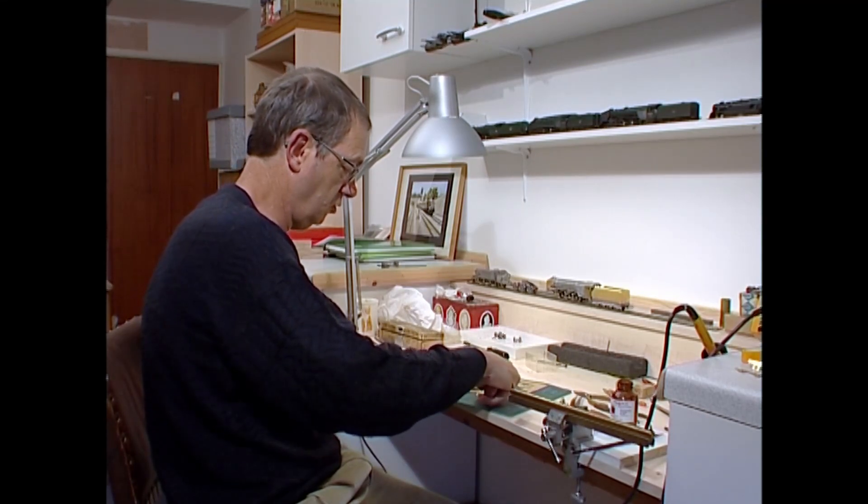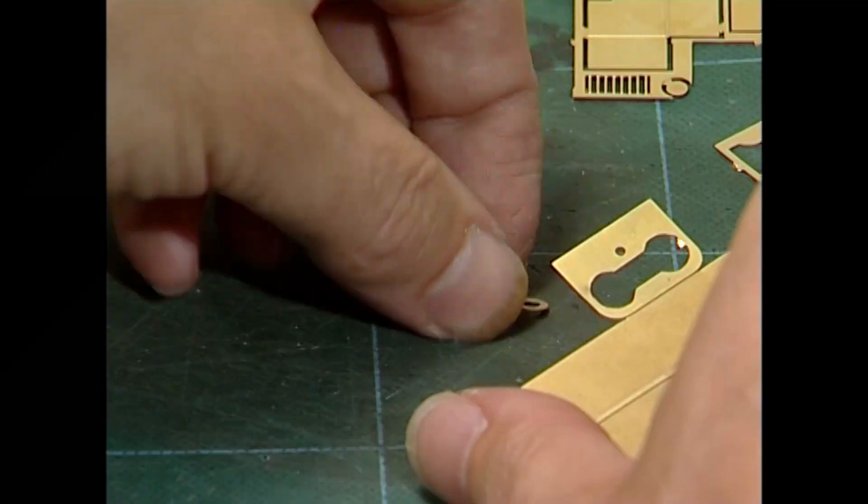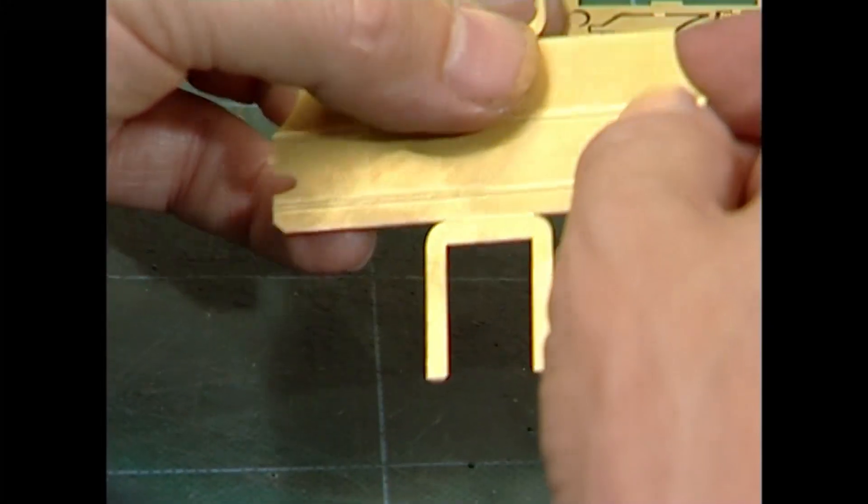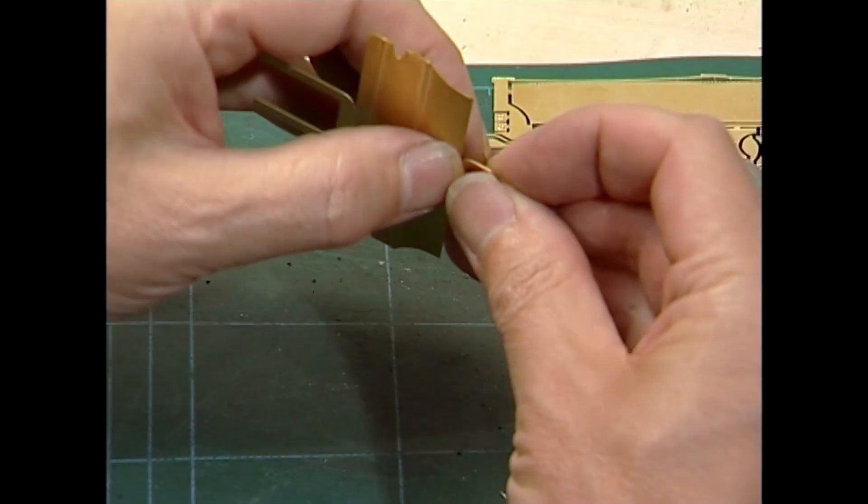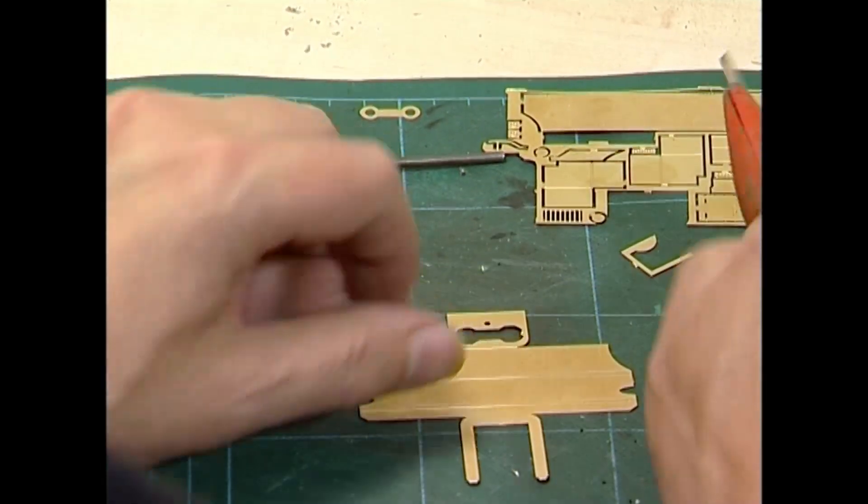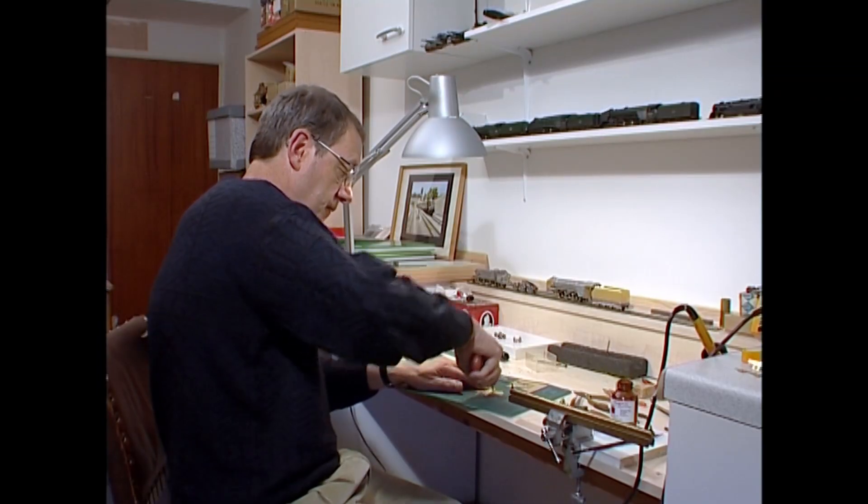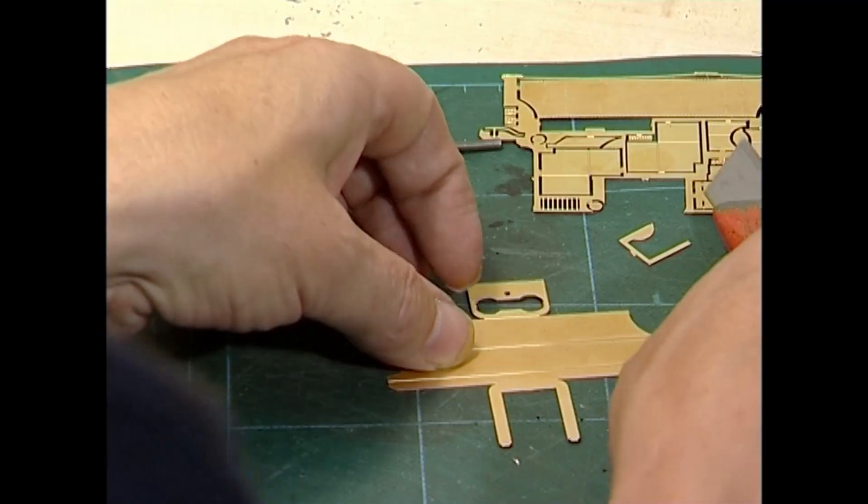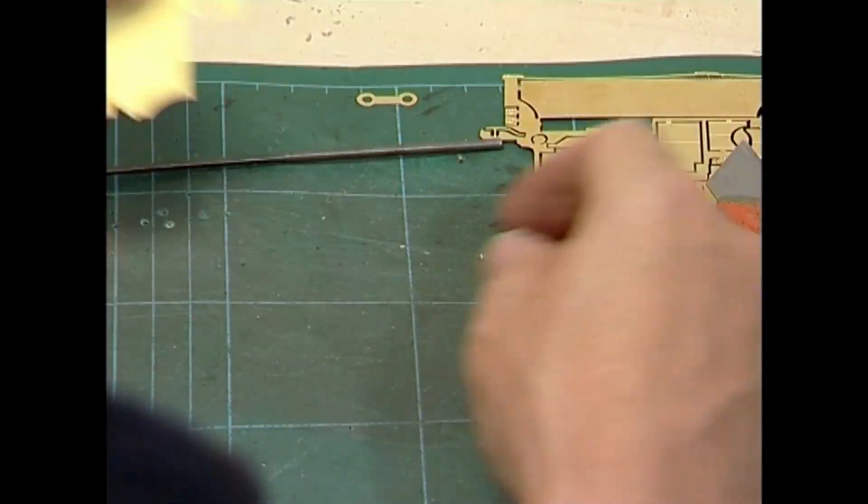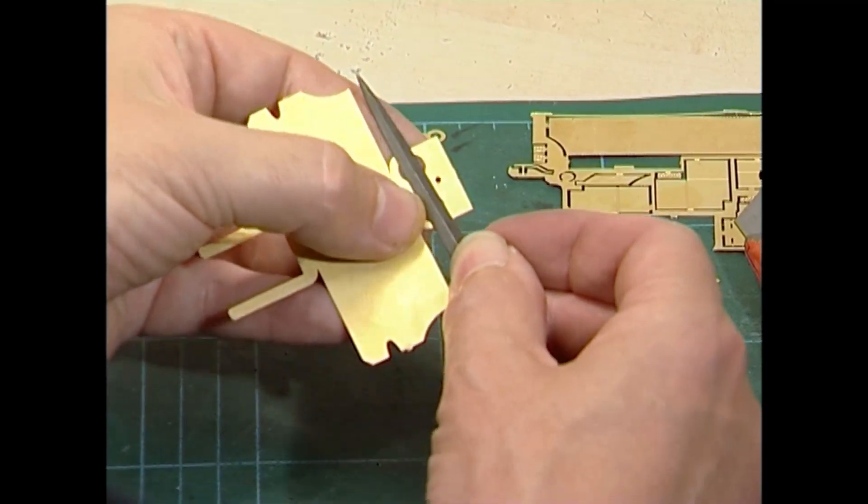Etch kits are very cunningly designed. That, for instance, is the drawbar. So we have to remove that. Cutting it out, always well away from your fingers. And so on.